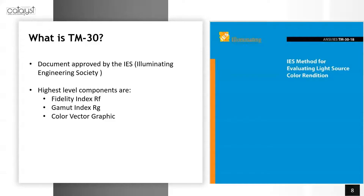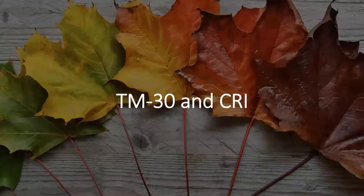At its highest level, the TM-30 standard uses a Fidelity Index measured as Rf, a Gamut Index measured as Rg, and a Color Vector Graphic. So we've gone from a single CRI metric on a scale of 0 to 100 to these three core components of the TM-30 standard.